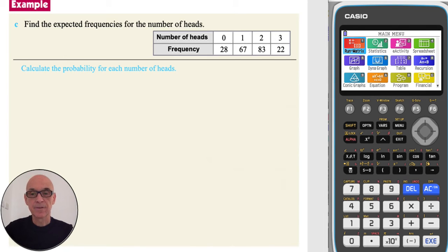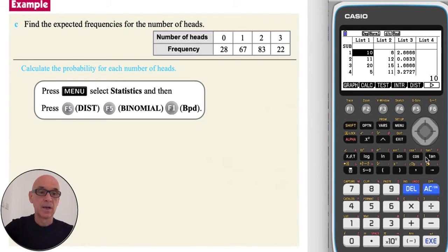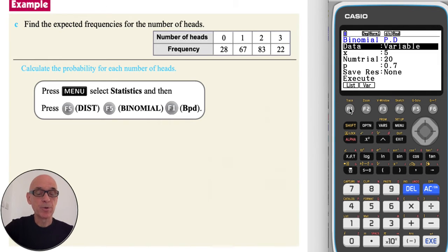In part C, to find the expected frequencies for the number of heads obtained, we first need to calculate the probability for each number of heads. And we do this on the calculator. From the main menu, if we select statistics, then press F5 for a distribution, and F5 again for a binomial distribution, and F1 for a binomial probability calculation.